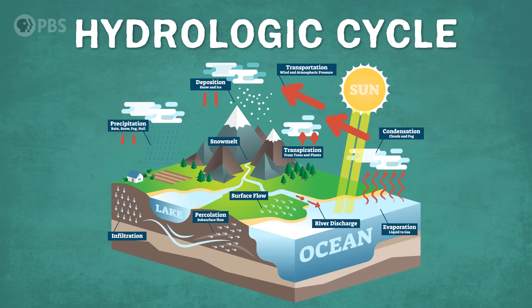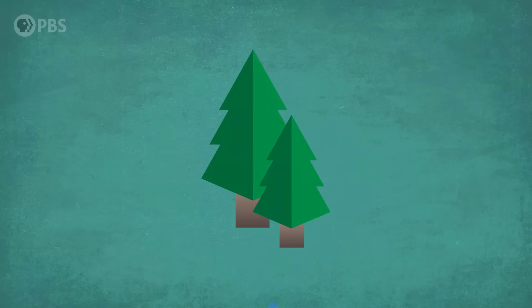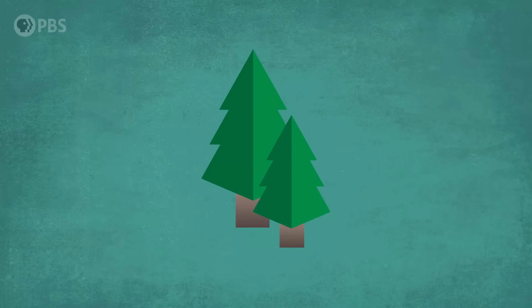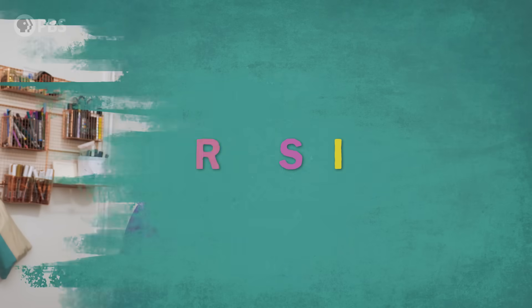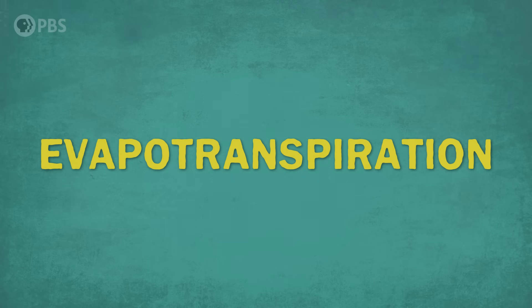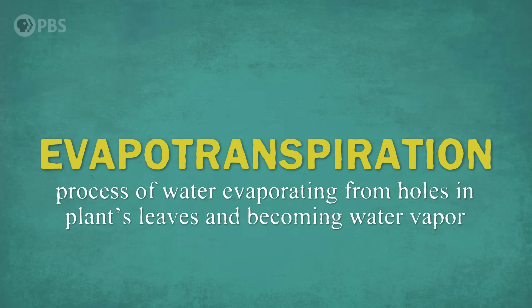A pretty important detour: if the water enters the ground, it's now accessible to plants. Water is an essential ingredient for photosynthesis, and plants suck it up through their roots so they can steal the oxygen off of that H2O and release it into the atmosphere as breathable oxygen. Thank you, plants. Any excess water not used in photosynthesis is also released through the process of evapotranspiration, in which water evaporates out of small holes in a plant's leaves and enters the atmosphere once again as water vapor.